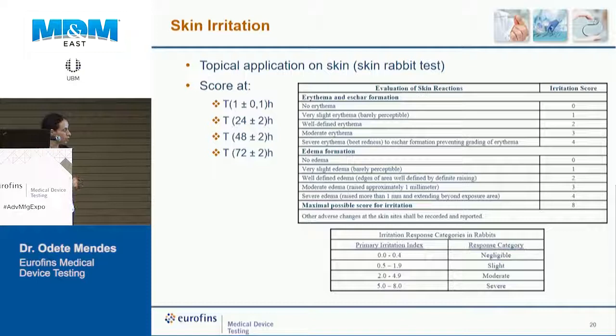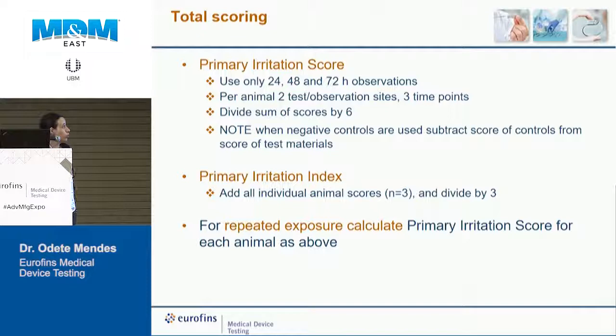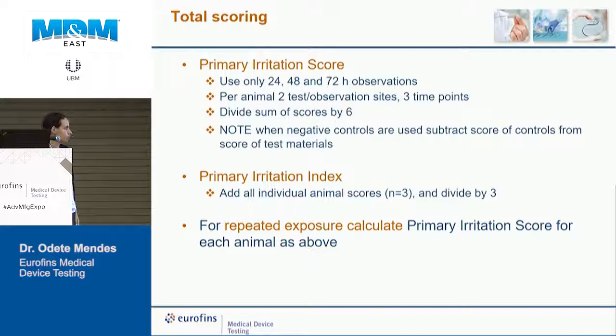Based on the irritation index, the result is classified as negligible/non-irritant, slight irritant, moderate, or severe irritant. Only the last three time points — 24, 48, and 72 hours — are used for scoring calculations, along with the number of animals. If the device contacts skin multiple times repeatedly, a repeated exposure study with a repeated irritation score may be needed.